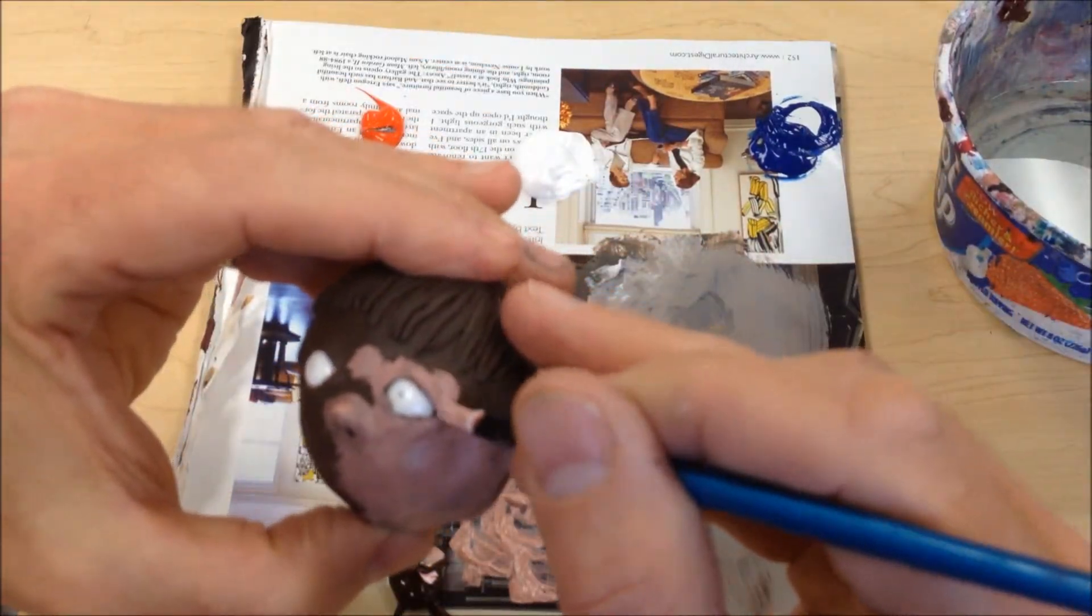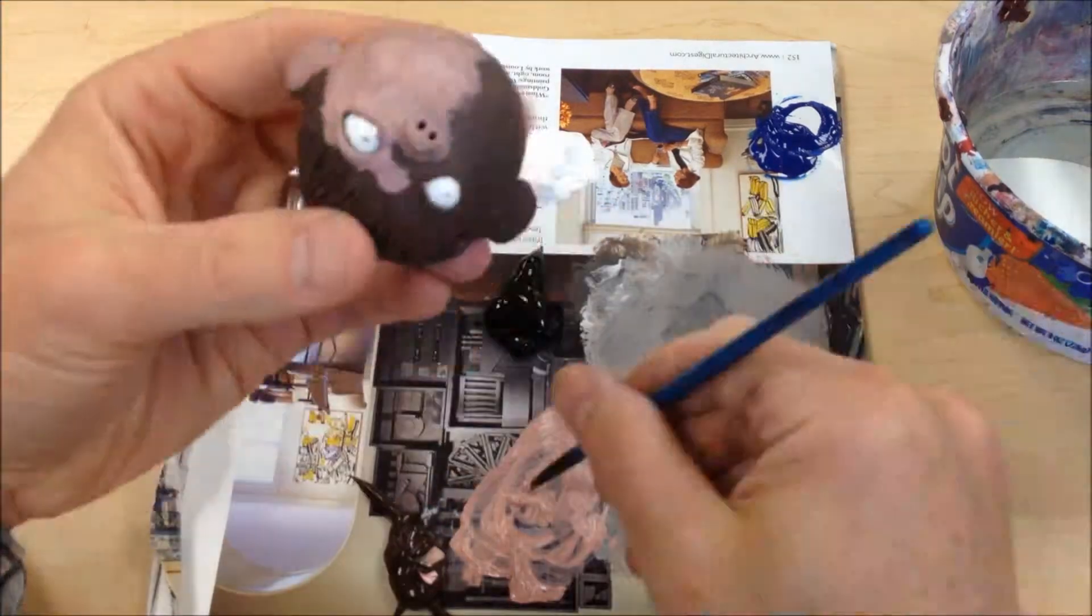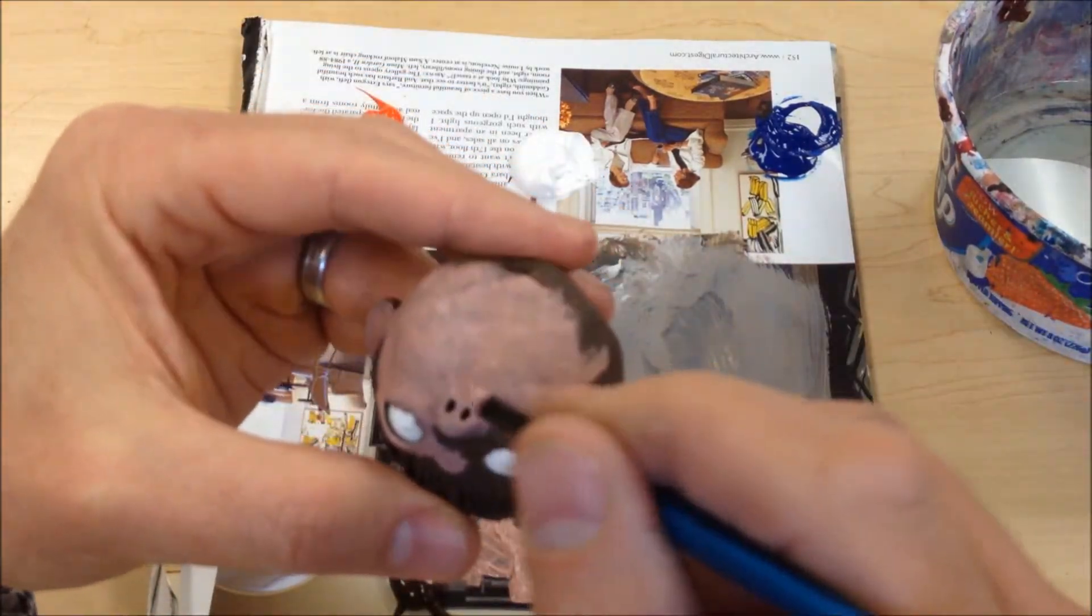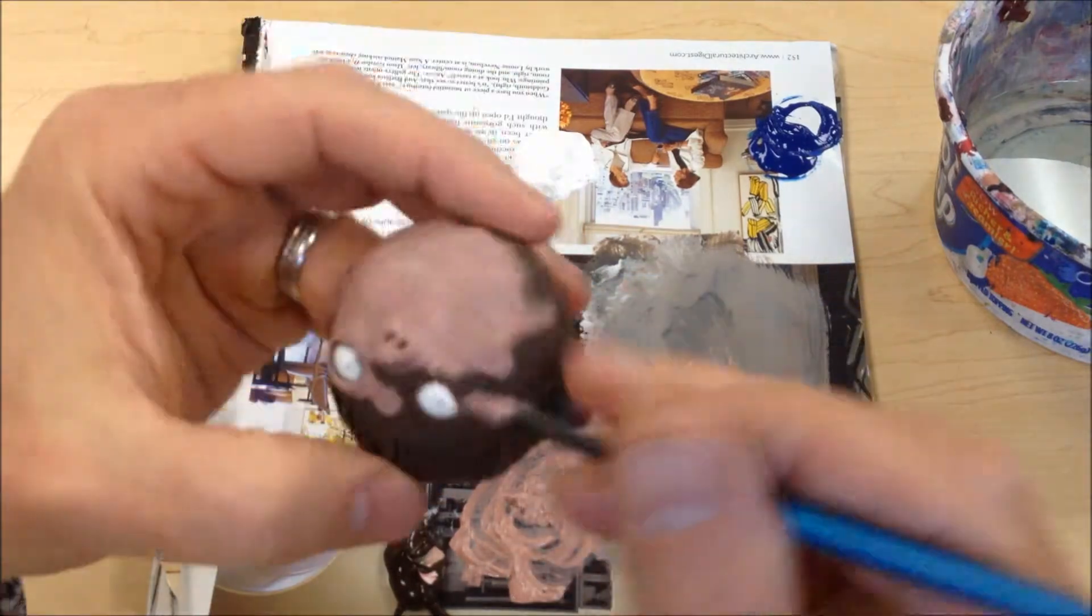I'm covering pretty consistently. But not thick, globby paint. I want to make sure that it's nice and smooth and skin-like when I work like this.